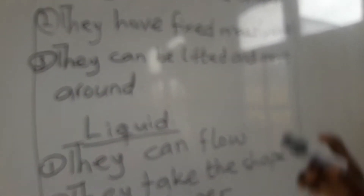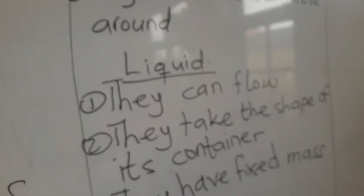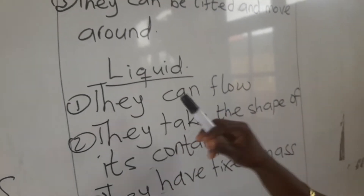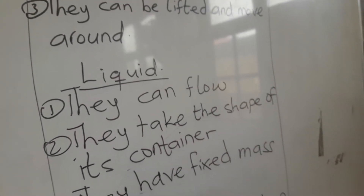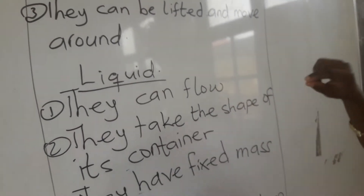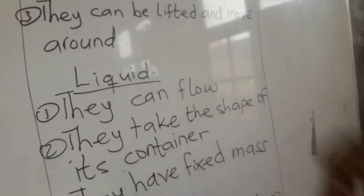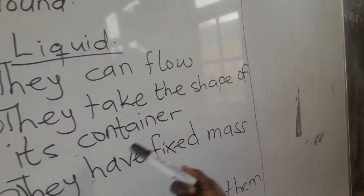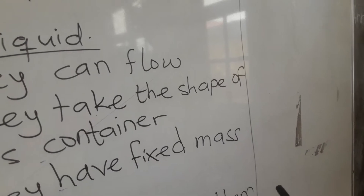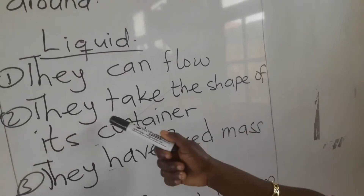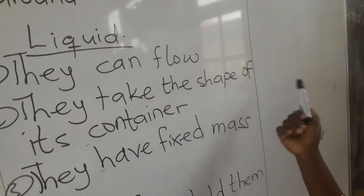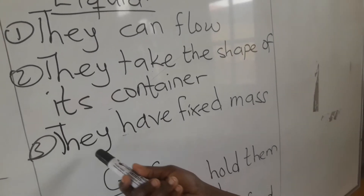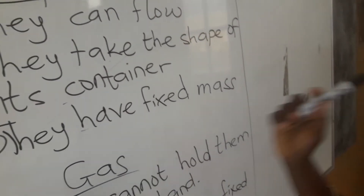Let's look at liquid. They can flow. So anything that you can pour out that can flow is a liquid. They can take the shape of each container. They have fixed mass.